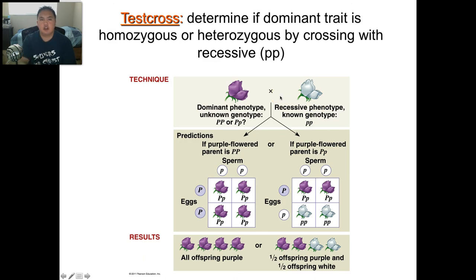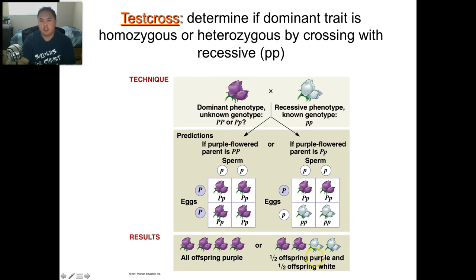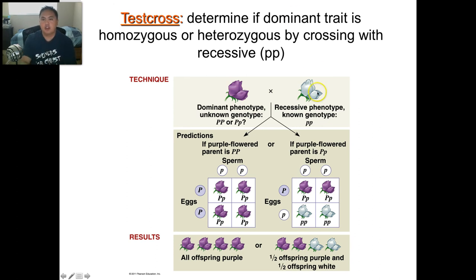How do you determine if a dominant trait is homozygous or heterozygous? You do a test cross — cross it with a recessive phenotype. You know the white flower must be lowercase p lowercase p. If the purple flower is capital P capital P, all offspring will be purple. But if it's capital P lowercase p — heterozygous — and you cross it with the double recessive, you should get half and half. That's the technique to determine if a dominant organism is homozygous or heterozygous: cross it with a double recessive.